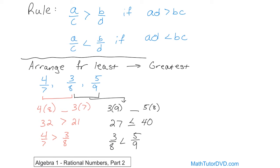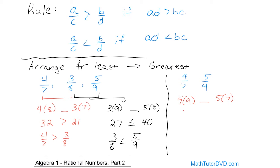By doing two separate comparisons, we know that 3 eighths is the smallest of all three. But we need to know which of the remaining two fractions is bigger. Let's compare 4 sevenths to 5 ninths. Cross multiply: 4 times 9 on one side and 5 times 7 on the other. 9 times 4 is 36, and 5 times 7 is 35. 36 is bigger, so 4 sevenths is bigger than 5 ninths.